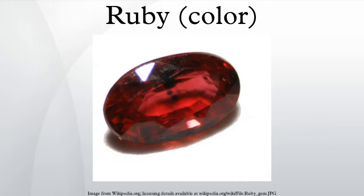Displayed at right is the color big dip o ruby. Big dip o ruby is one of the colors in the special set of metallic Crayola crayons called Metallic FX, the colors of which were formulated by Crayola in 2001. This is supposed to be a metallic color; however, there is no mechanism for displaying metallic colors on a flat computer screen.